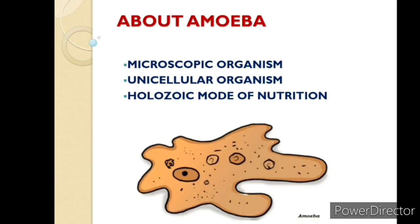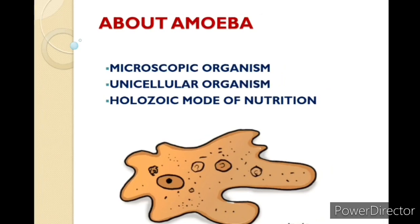Third, amoeba has an irregular shape. As you can see in the diagram, the shape of amoeba is not fixed — it is irregular, meaning the shape changes from time to time. Amoeba shows holozoic mode of nutrition.